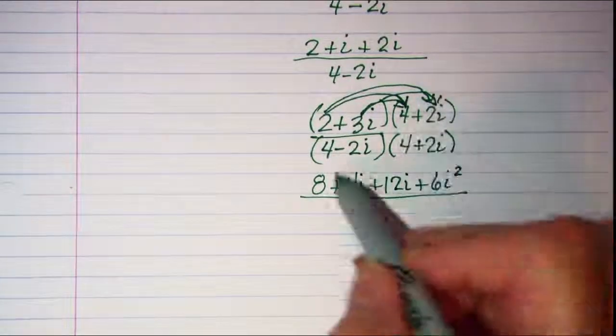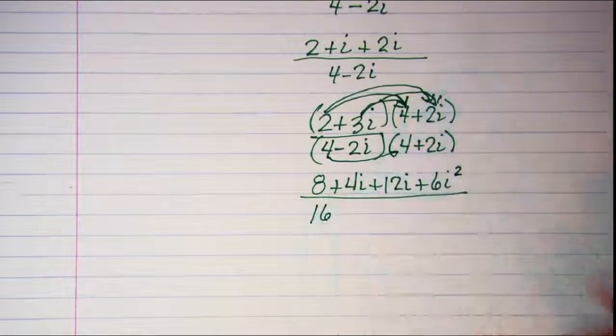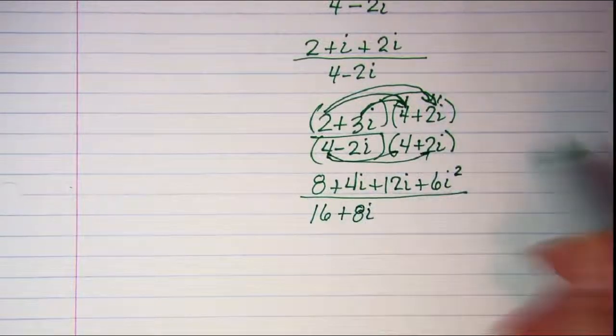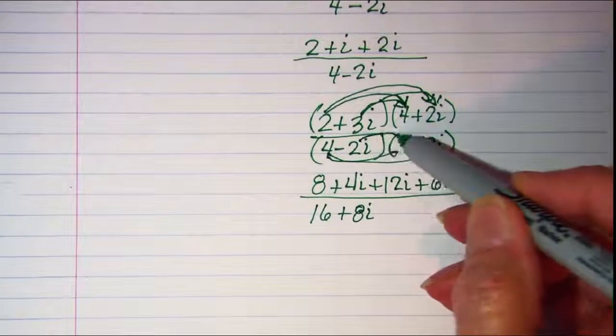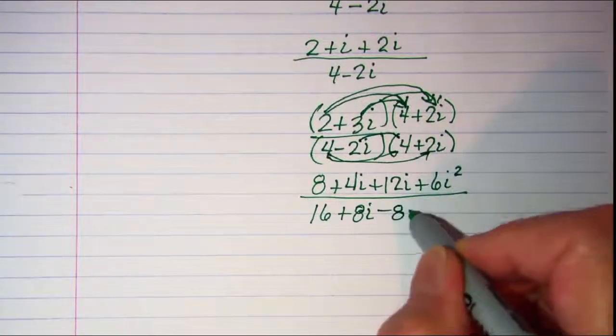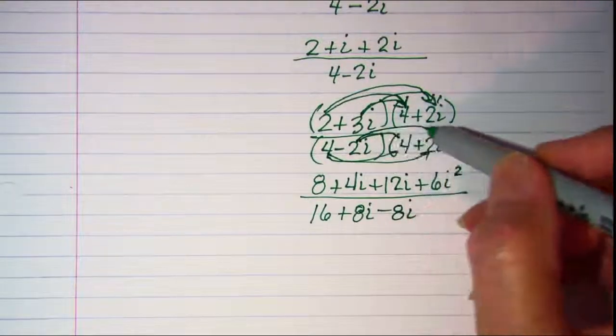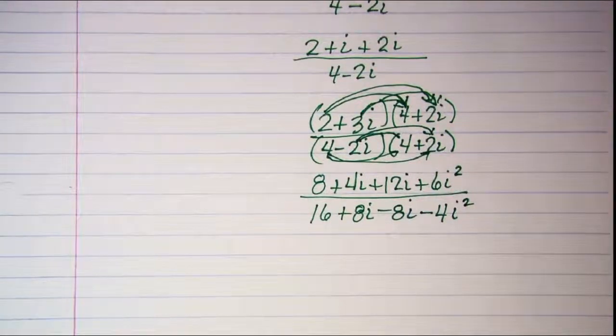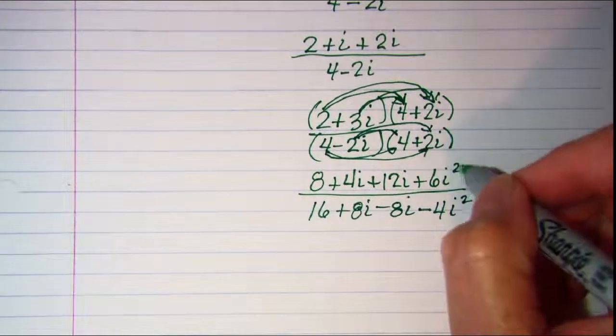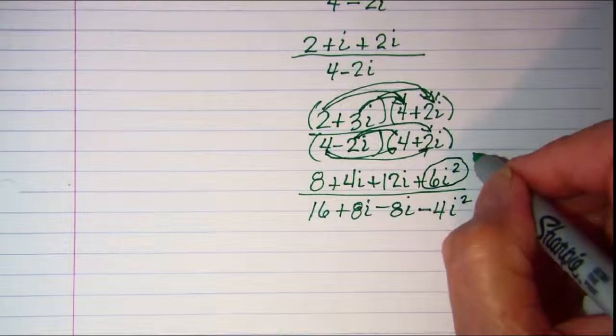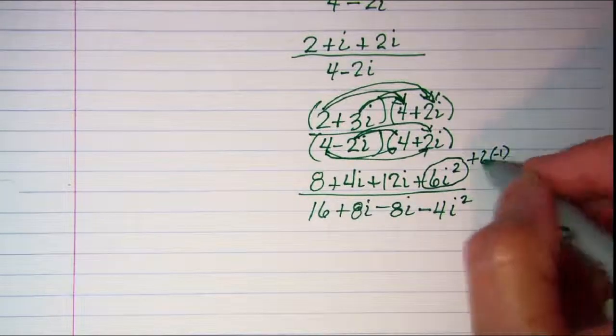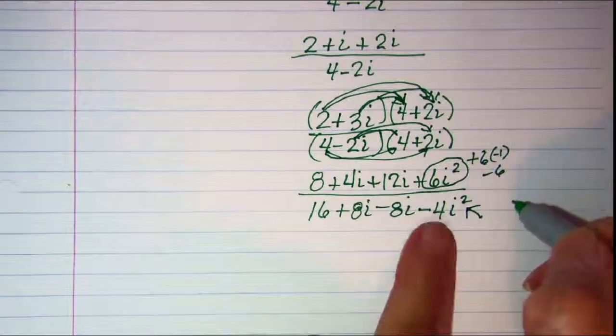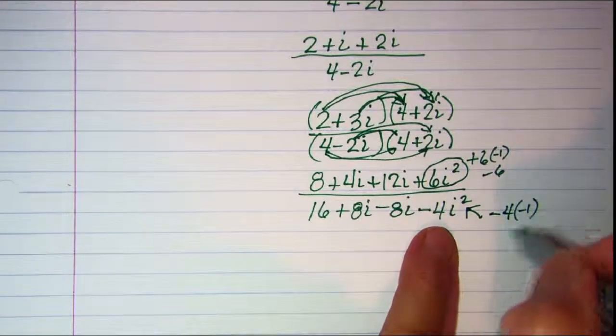In the bottom I have 4 times 4 is 16 and 4 times 2i is 8i and then negative 2i times 4 is negative 8i and then negative 2i times positive 2i is negative 4i squared. Now these i squareds, this is the same as plus 6 times negative 1 which will be minus 6, and then this is the same as negative 4 times negative 1 which is plus 4.